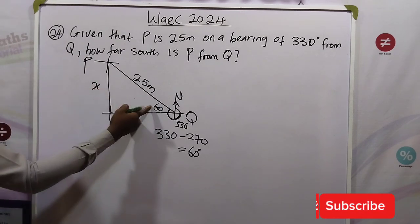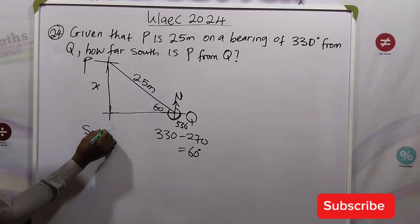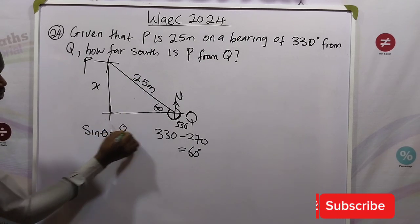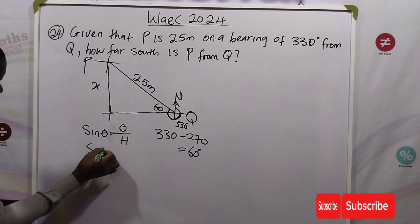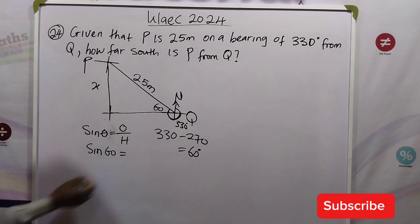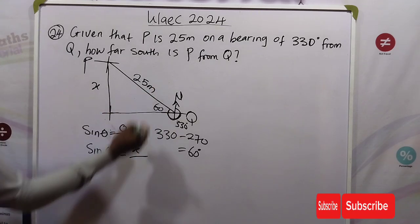This is opposite and hypotenuse. So we are going to make use of sine theta equals opposite over hypotenuse to simplify. Now our theta is 60. So we have sine 60 equals, our opposite is X, our hypotenuse is 25.